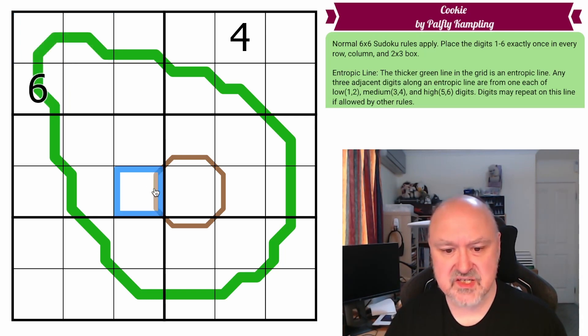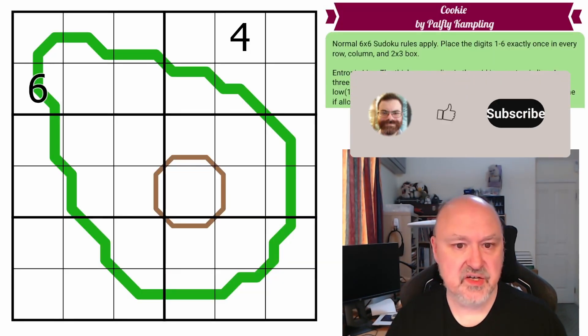The other rule is digits on this brown line sum to 10 or add to 10, and digits may repeat on this line if allowed by other rules. I'm going to restart the puzzle, let's give this one a shot.